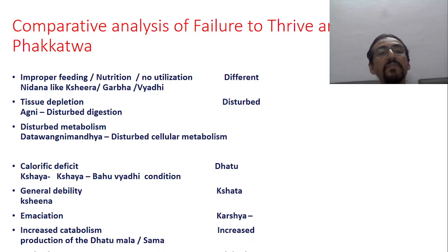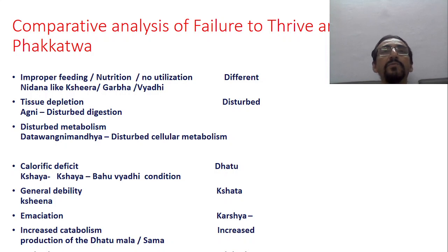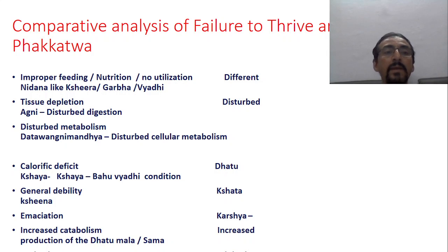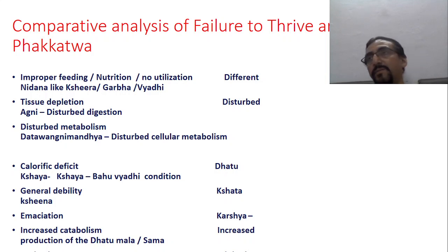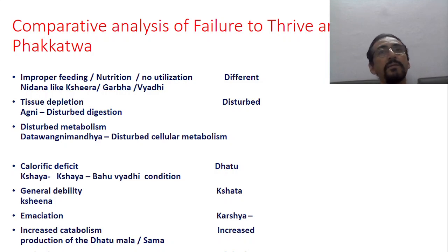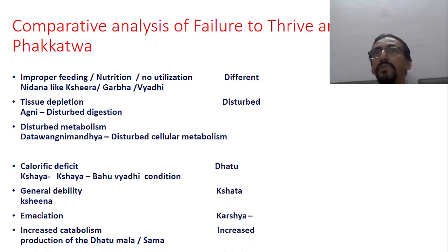Almost all the same is explained in our science under the heading of Fakatwa. He has not mentioned individual disorders but nija and agantujya — different types of nija vyadi and different types of agantujya vadi. Tissue depletion is seen in FTT as a basic issue, and tissue depletion is also seen in fakka roga, because they say bala maamsa kshaya, shirna maamsa baladhyutihi — this is nothing but tissue depletion.